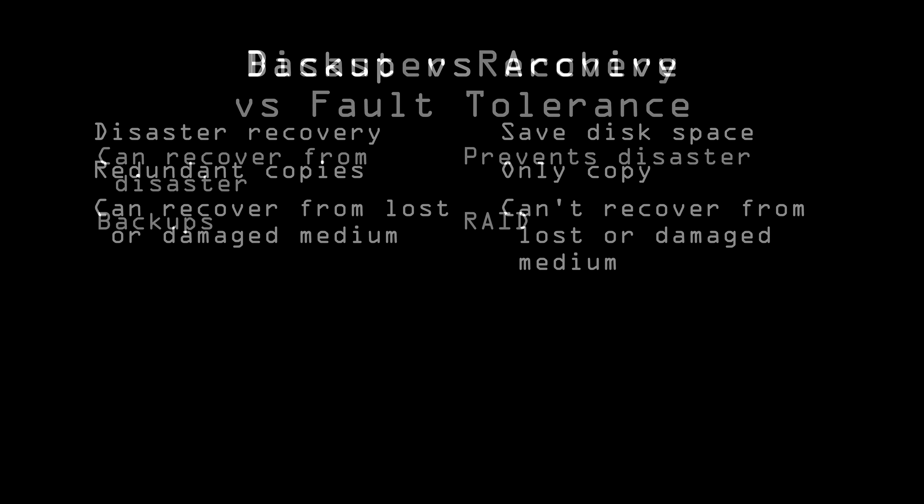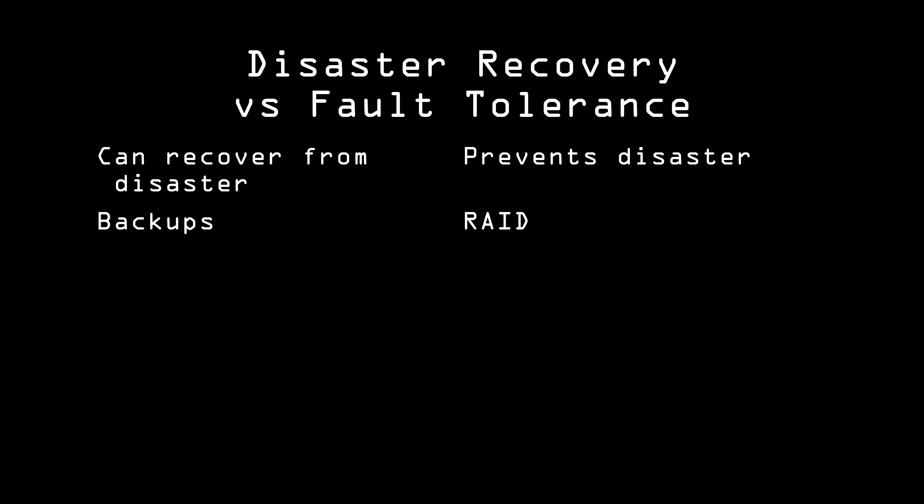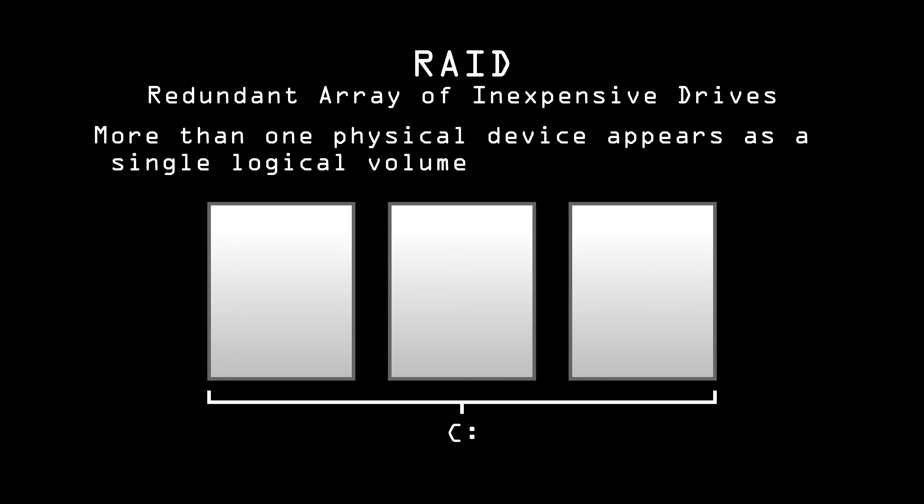Let's also distinguish between disaster recovery and fault tolerance. A backup system is disaster recovery. Fault tolerance is something you can do to help prevent a disaster to begin with. A common method of fault tolerance with hard drives is called RAID, where you have your data spread out among separate physical devices, even though it appears to your operating system as one logical drive.